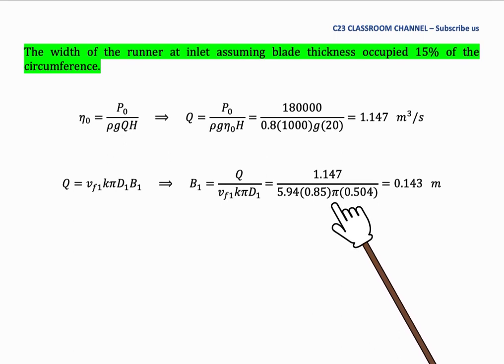The idea to calculate the value of K is given in the previous lesson. From this calculation, we get B1, the blade width at inlet, is 0.143 meters.